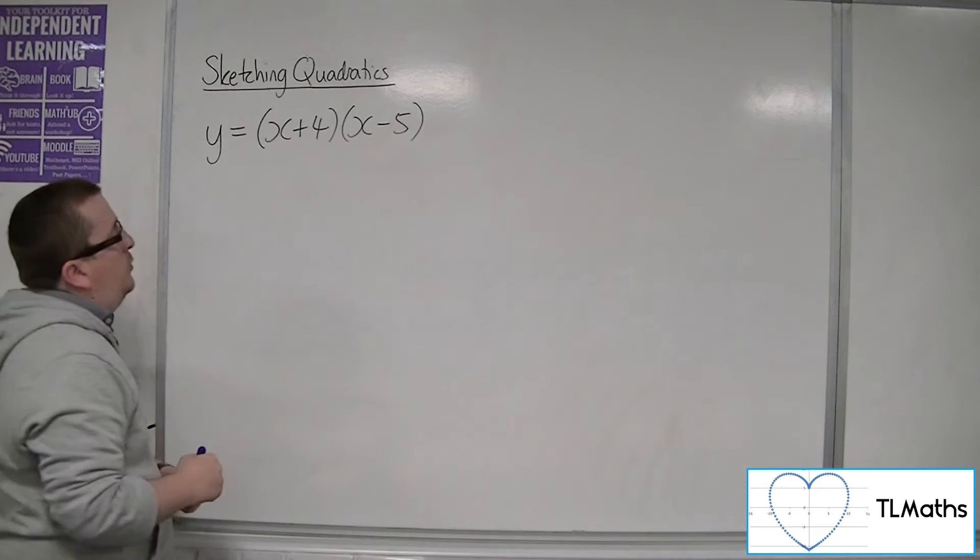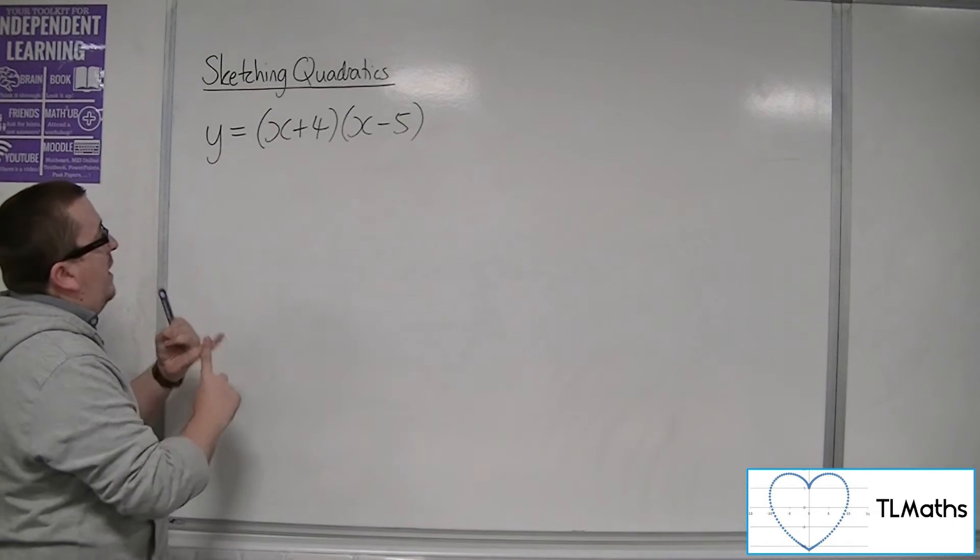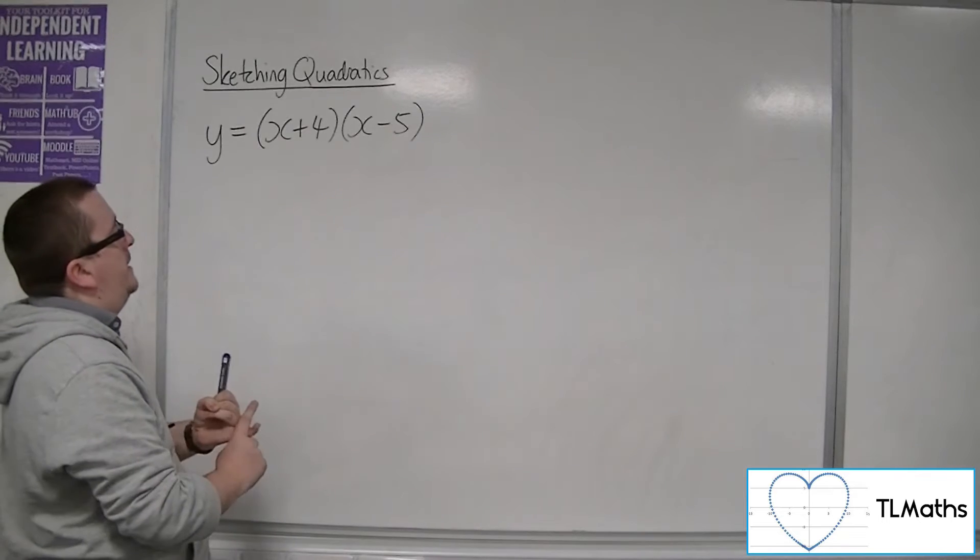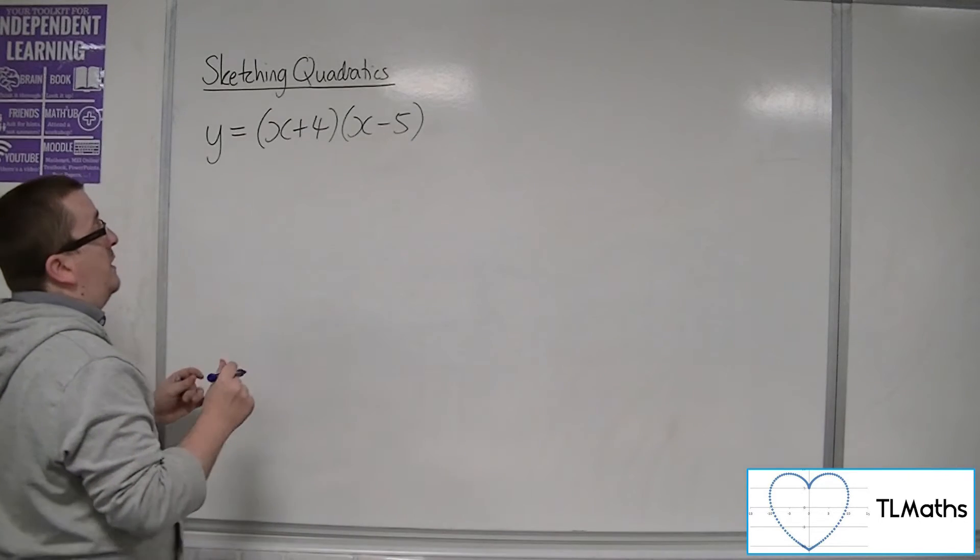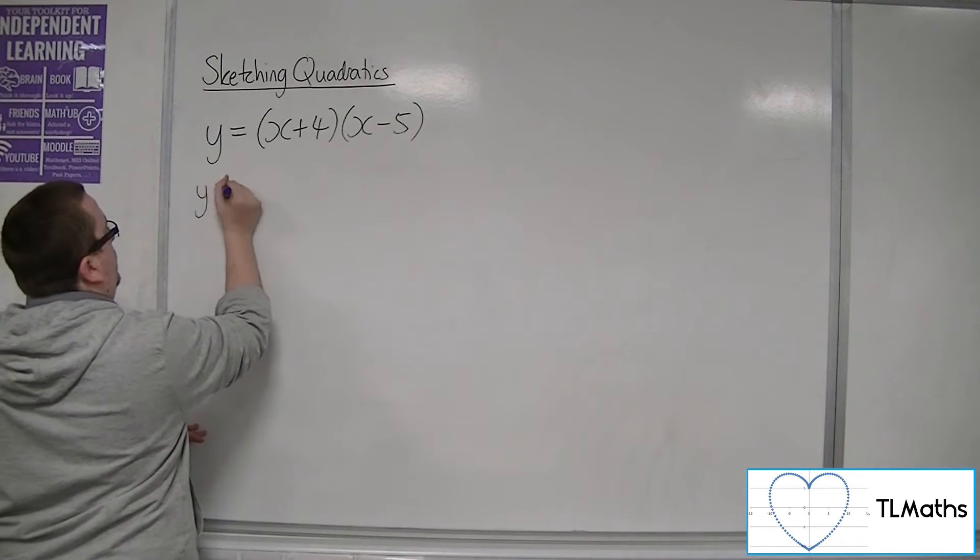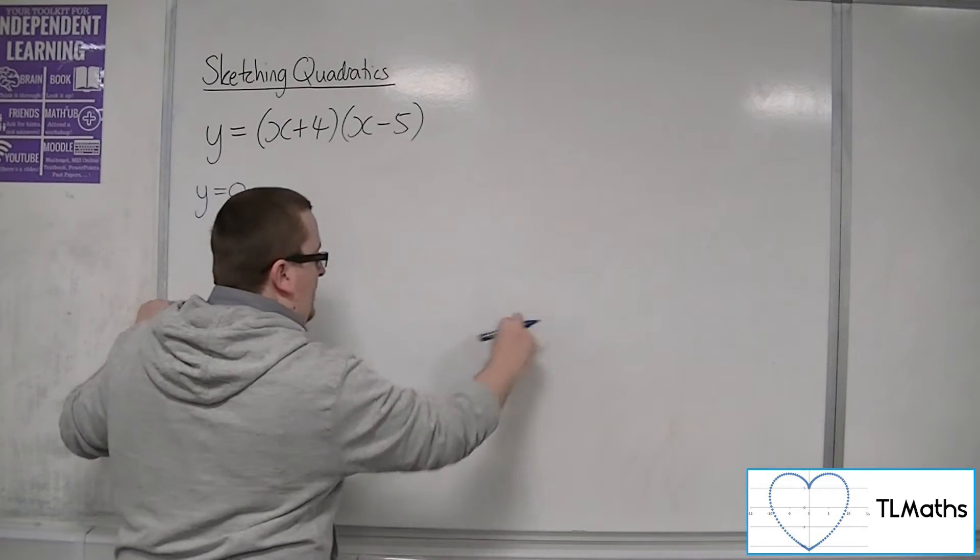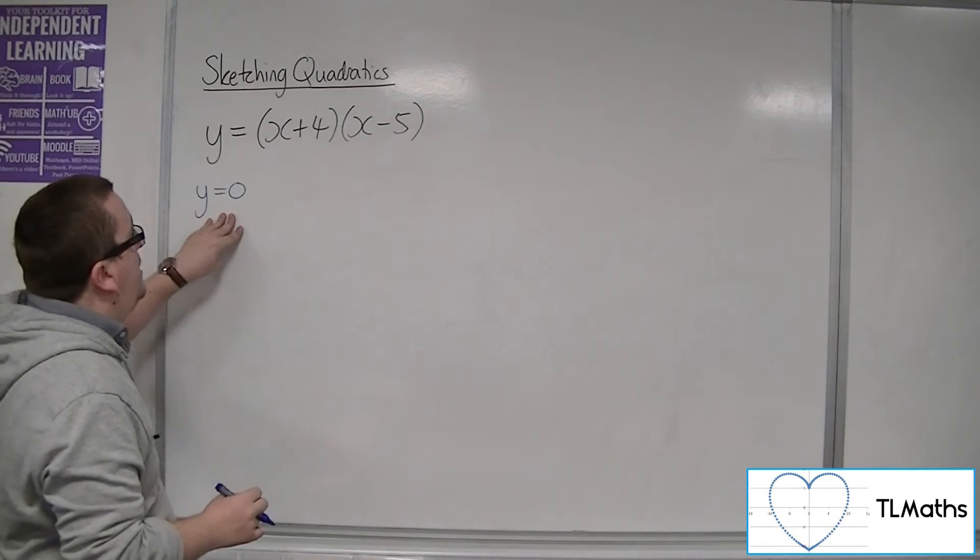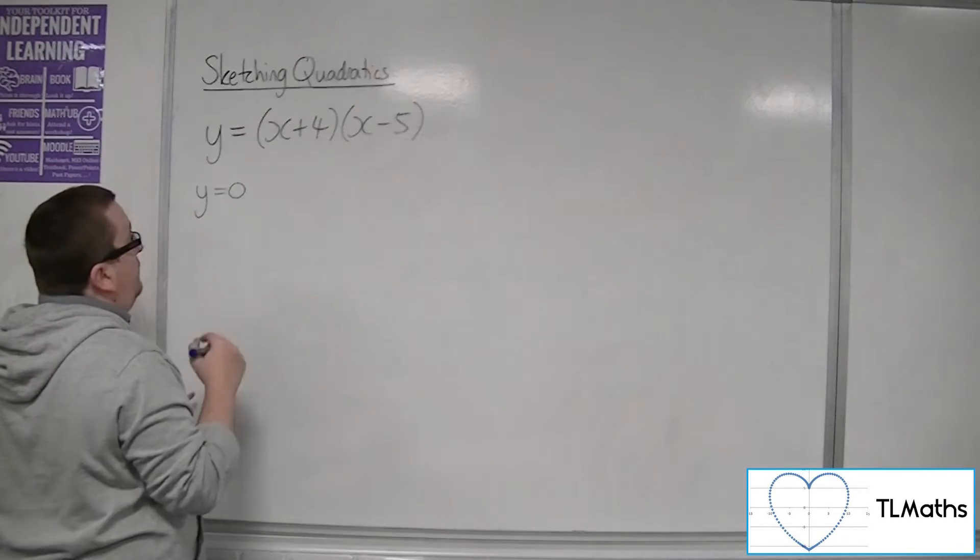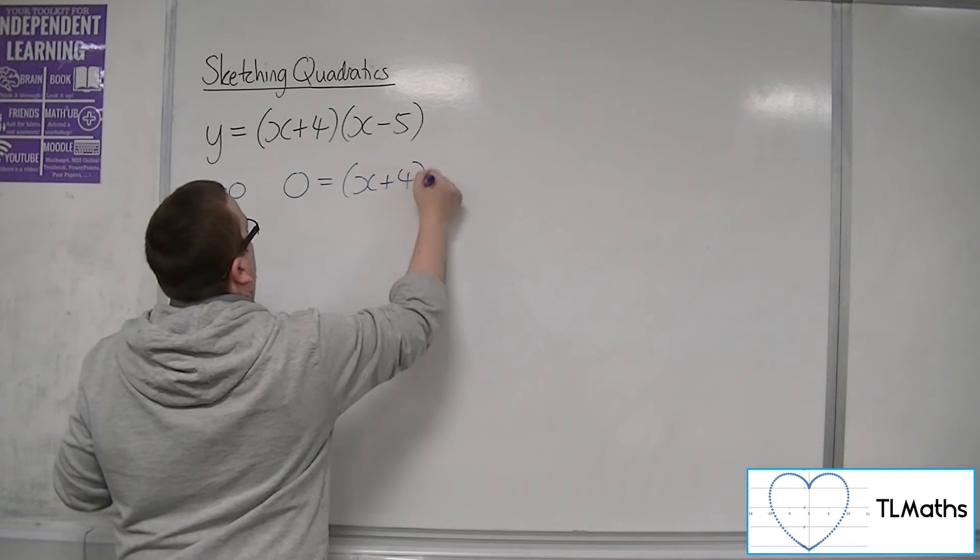Now, how do I sketch it? Well, first thing to do is to really identify where it is crossing the x and y axis. We can identify where something crosses the x-axis by putting y equal to 0, because y equals 0 is the horizontal line that represents the x-axis. If we put y as 0, we're trying to find where it's crossing that line.